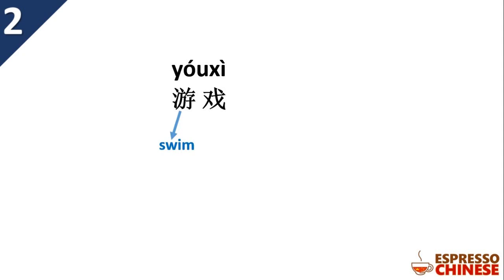游戏. 游 means 'swim'. Look at the character — on the left side, we have these three dots, which is called the water radical. Characters with the water radical must have something to do with water. Of course, to swim, you swim in the water, so you have the water radical.